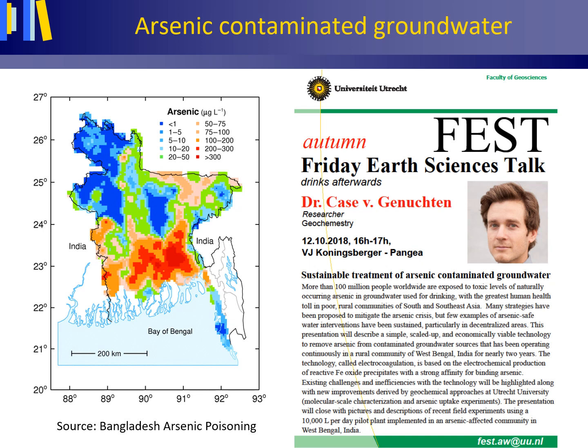High levels of arsenic can be found in drinking water from deep drilled wells, which is particularly true for Bangladesh. The left figure shows these high levels for Bangladesh. As a reference, the US Environmental Protection Agency sets an arsenic maximum contaminant level for public water supplies at 10 micrograms per liter. This figure shows concentrations over 10 micrograms per liter for large parts of Bangladesh, with even values over 300 micrograms per liter.